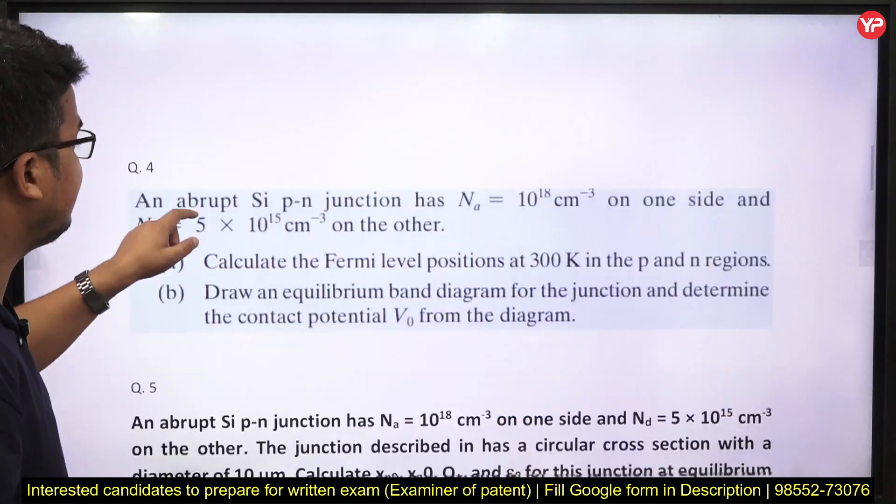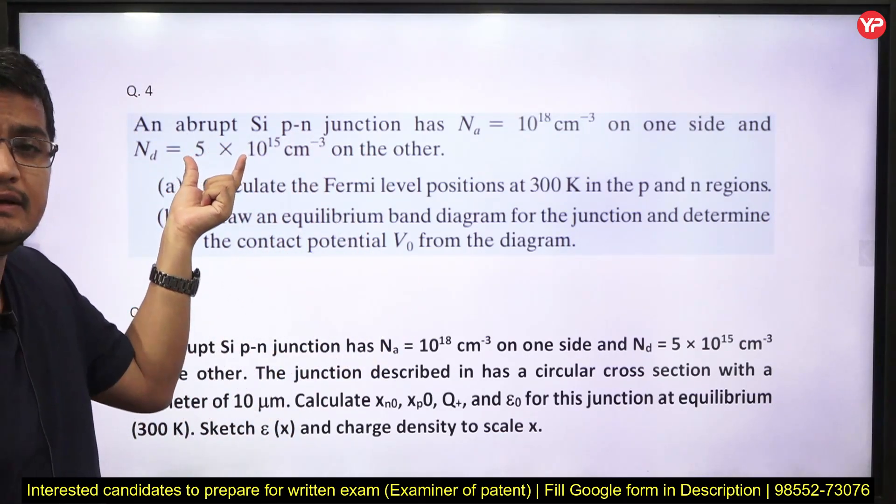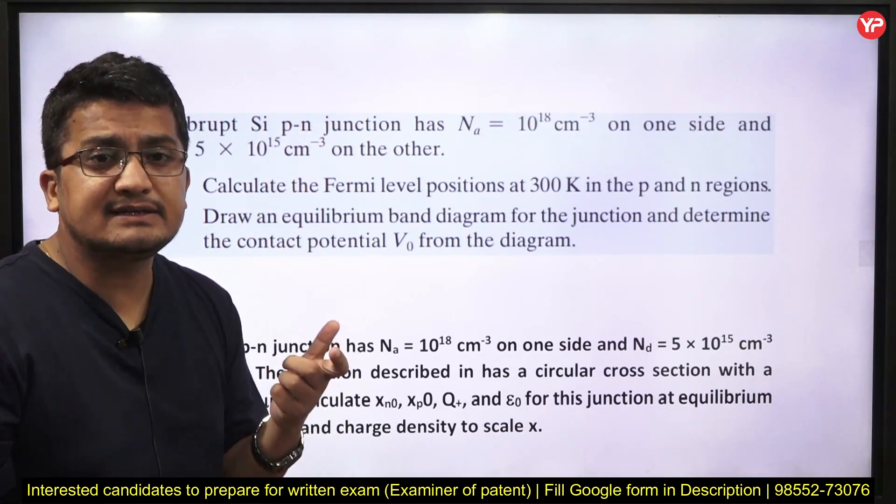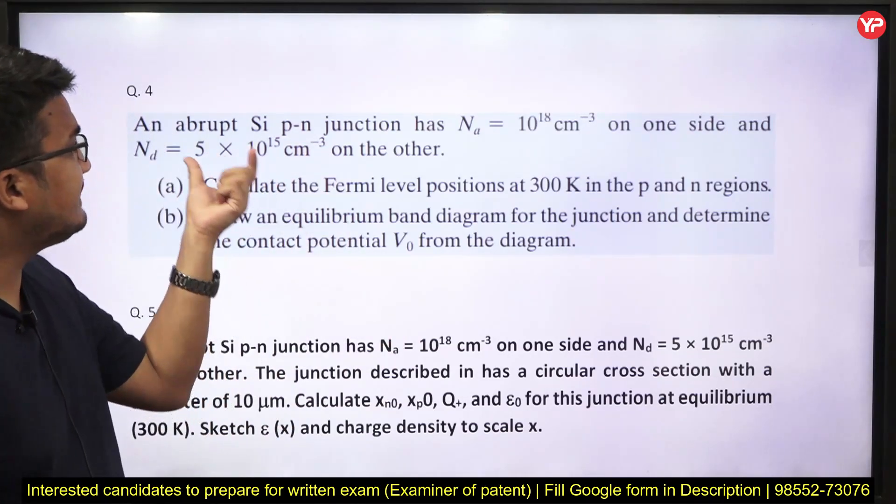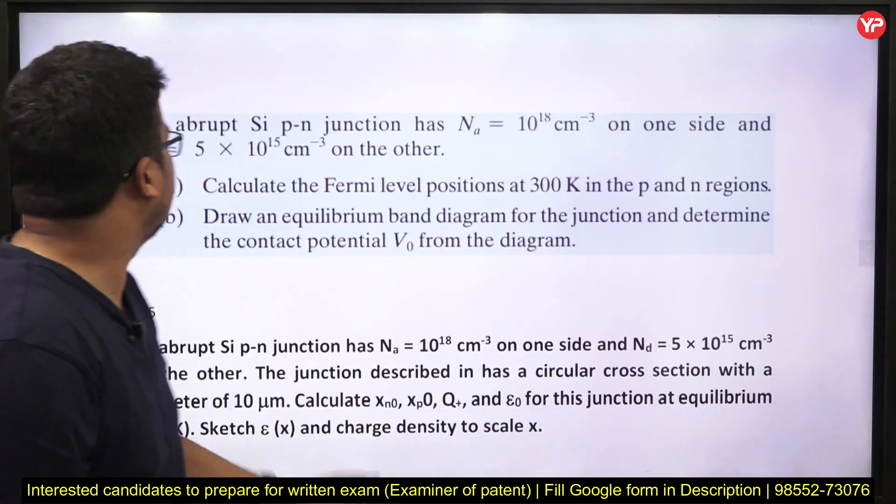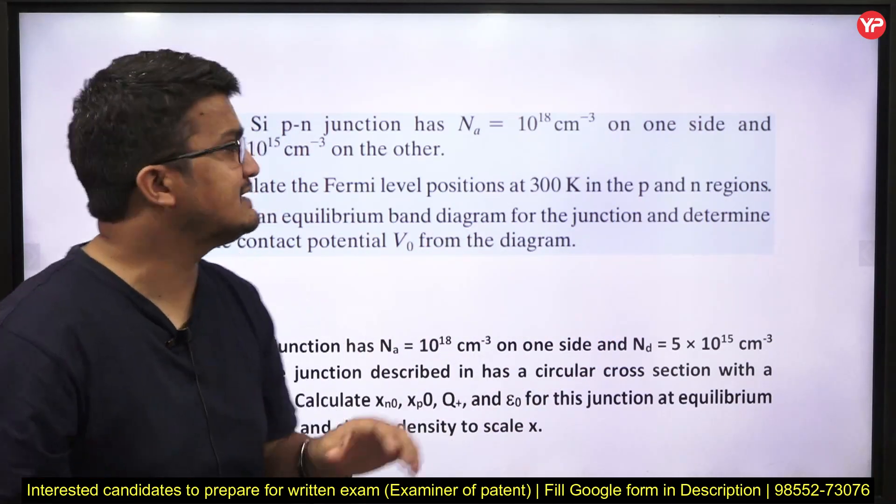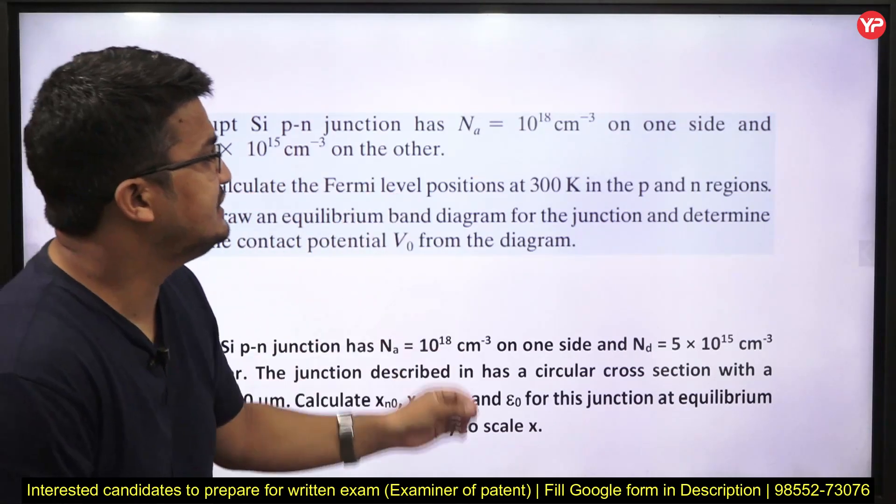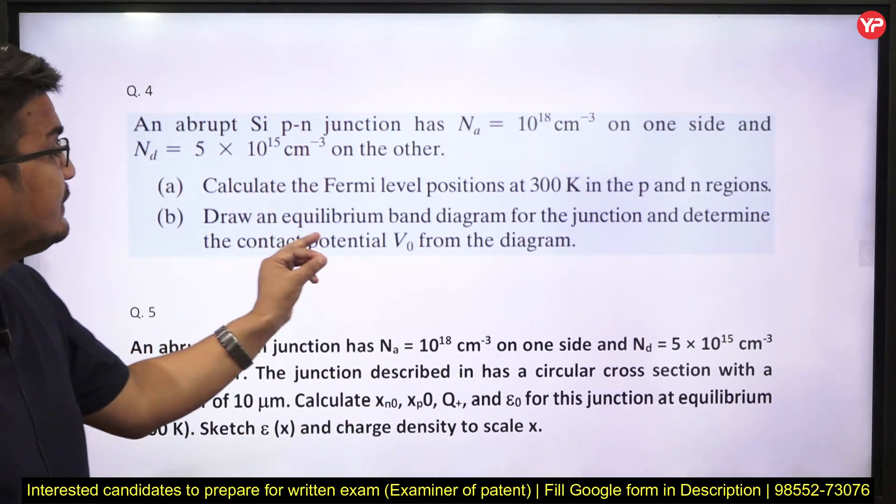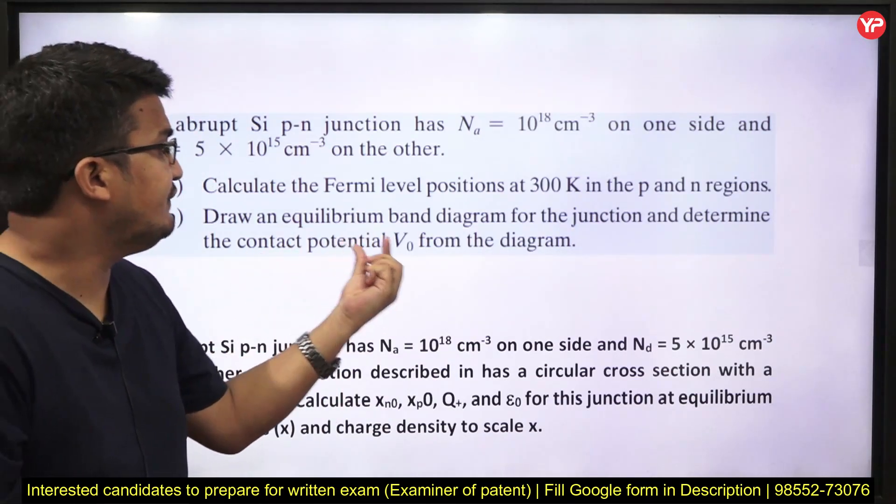Next question if I share with you: an abrupt silicon PN junction. Sometimes students get confused with abrupt, step graded, step indexed. These are some terminology used with the junction. I will be discussing them in the theoretical section. An abrupt PN junction has Na = 10^18 on one side and Nd = this on the other side. Junction means it is having two semiconductors, P side and N side. This is the specification. Calculate the Fermi level position at 300 K in the P and N region. Very straightforward question.